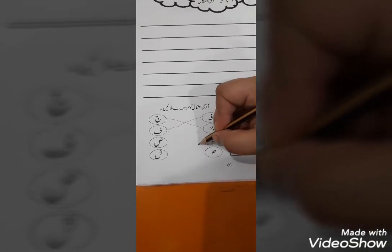What is the next aadhi shakal? Sheen. Sheen has three dots. Where is harf of sheen? Can you find out? Yes, this is harf sheen. So, put the pencil on this aadhi shakal and match to the harf sheen.